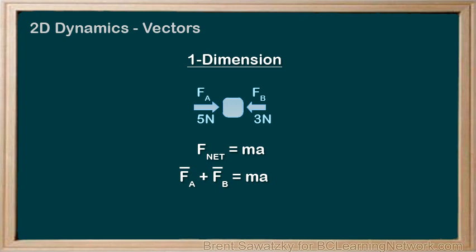Since we're considering directions, let's set the right to be positive. Our vector diagram would show 5 newtons right, and then, tip to tail, 3 newtons left. The resultant vector, or Fnet, would be from the start of the vector addition to the end. In a 1D problem, we can represent vector directions by simply showing the forces as positive or negative — any forces aimed to the right would be positive, and any forces to the left would be negative. After that, it's just adding or subtracting: 5 newtons minus 3 newtons is 2 newtons.